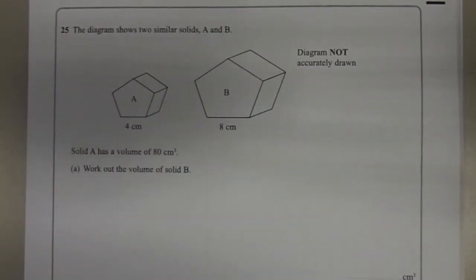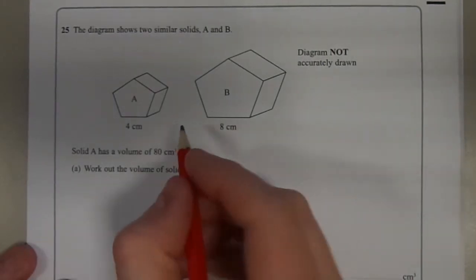Question 25. We've got two shapes, A and B. We know a length in each of them. We know that A has a volume of 80 centimetres cubed, and we need to work out the volume of shape B. If you have a look at the lengths,